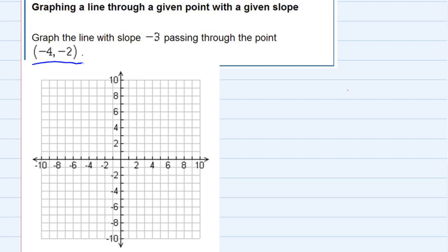Starting at the origin, I would move to the left 4 and then down 2. So that would be my point (-4, -2).